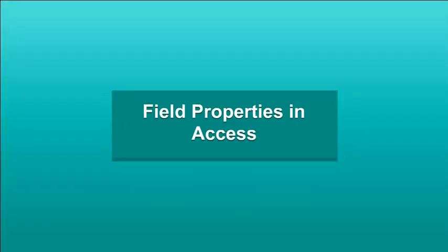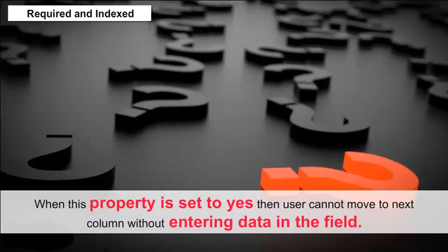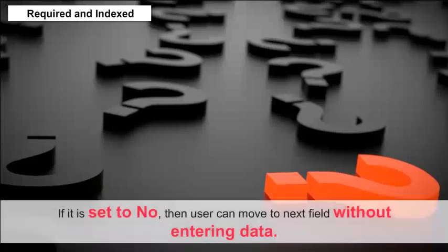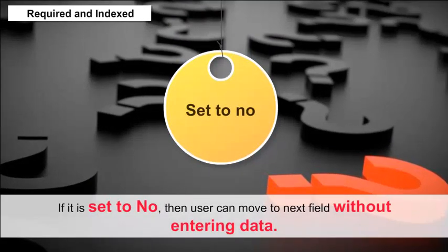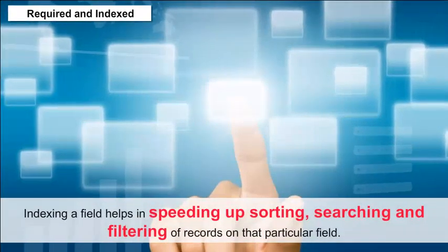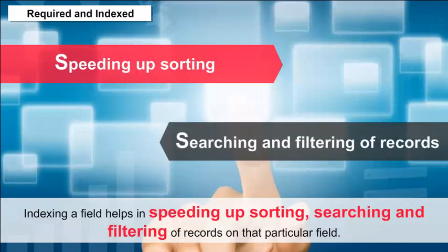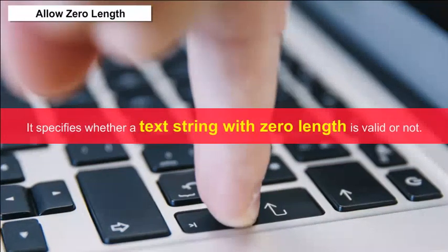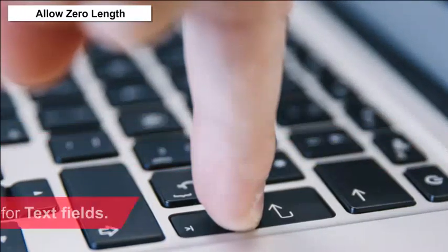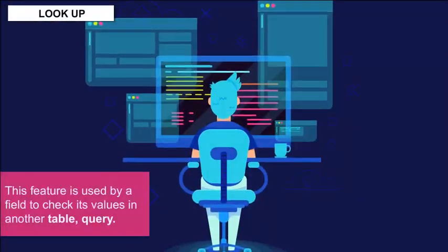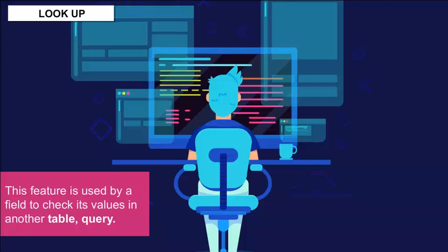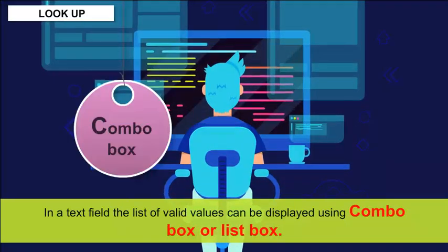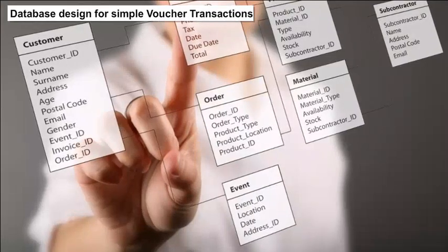Required and Indexed: When this property is set to yes, the user cannot move to the next column without entering data in the field. If set to no, the user can move to the next field without entering data. Indexing a field helps in speeding up sorting, searching and filtering of records. Allow Zero Length: It specifies whether a text string with zero length is valid. Lookup: This feature is used by a field to check its values in another table query, using ComboBox or ListBox.